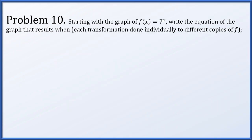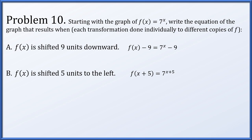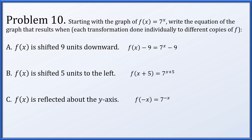For problem 10, we start with f(x) = 7^x and apply transformations independently. Shifted down by 9 units: subtract 9, giving 7^x - 9. Shifted 5 units to the left: replace x with x+5, giving 7^(x+5). Note by properties of exponents this equals 7^5 · 7^x — a horizontal shift is equivalent to a vertical stretch for exponential functions. Reflected across the y-axis: replace x with -x, giving 7^(-x).